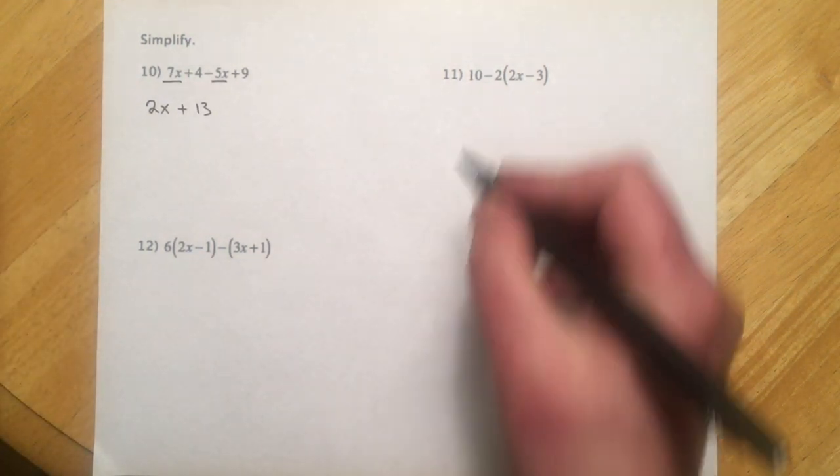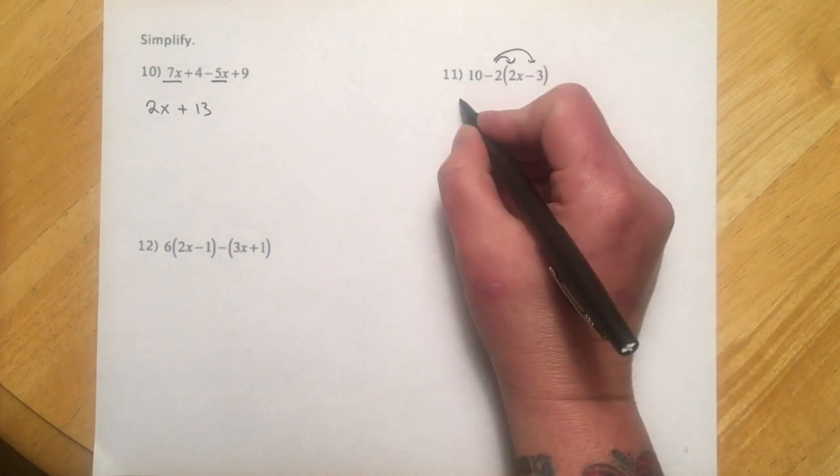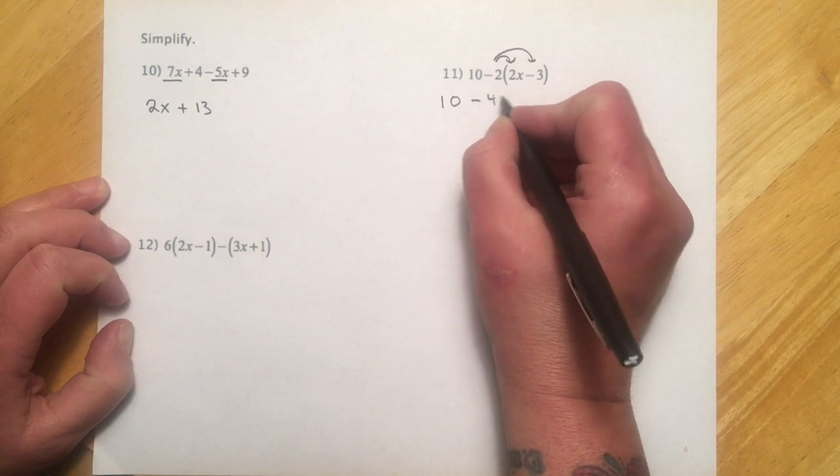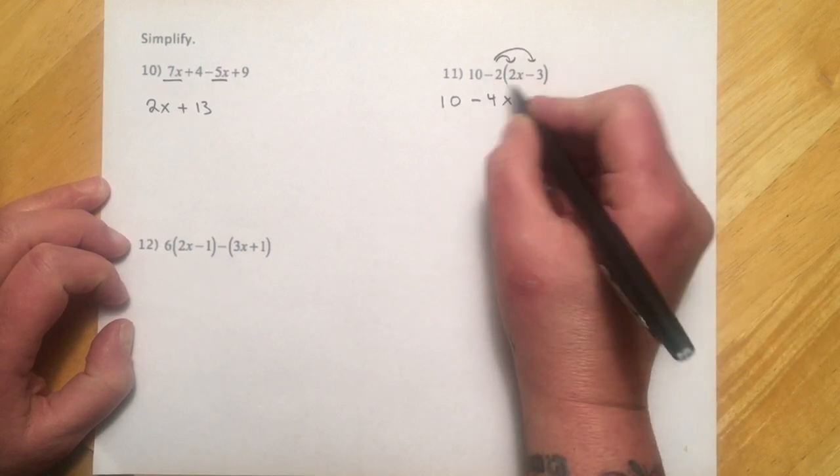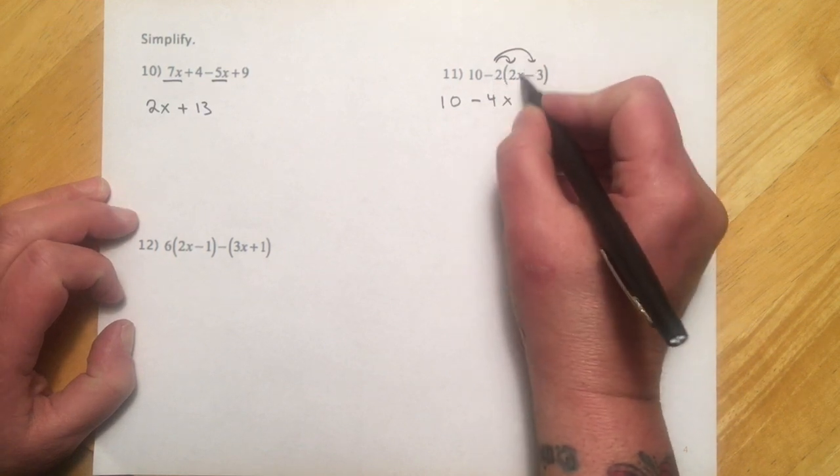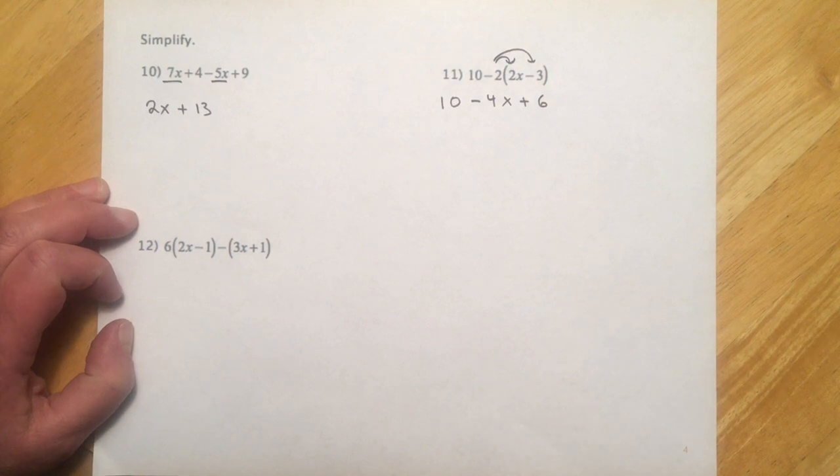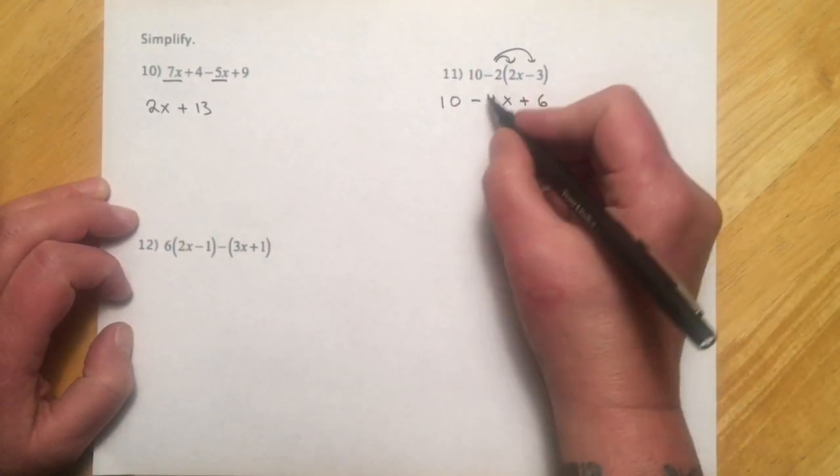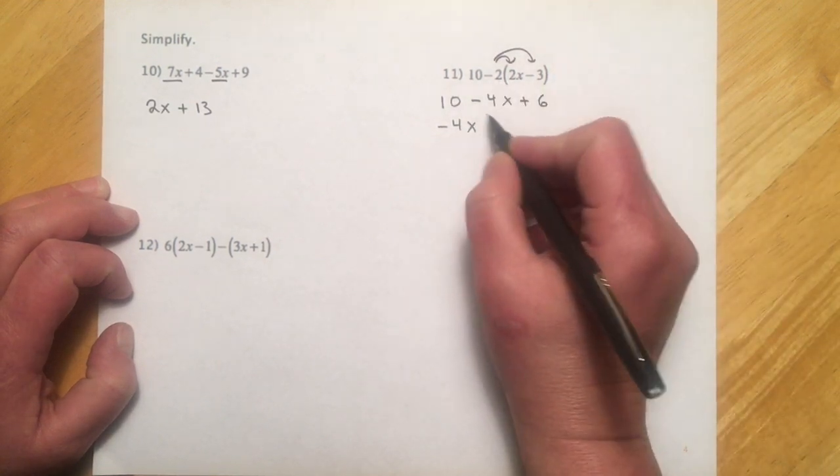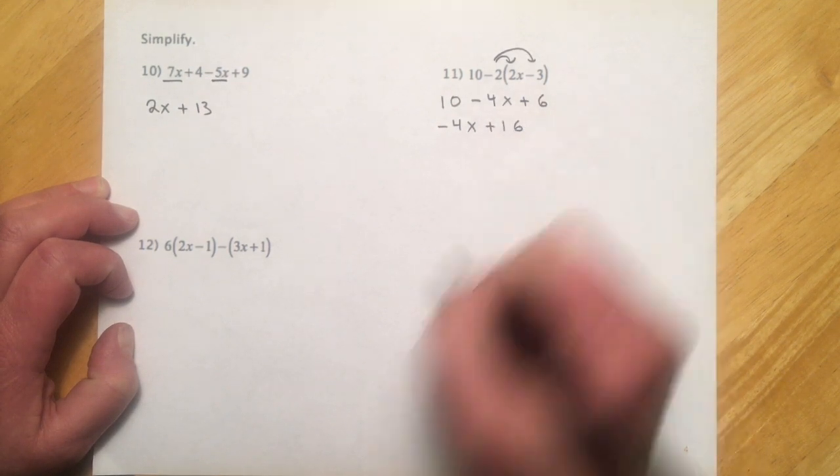Number 11 here, so we want to do our multiply, clear these parentheses. So we'd have 10, negative 2 times 2. So that's going to make negative 4 and x. And then careful with this. This is the sign that everyone messes up. So negative 2 times negative 3. That's going to change that to a positive 6. And then we gather up our x's and our numbers. So here I have a negative 4x. We usually do the x's first. It's called descending order. And then 10 plus 6 is going to make 16.